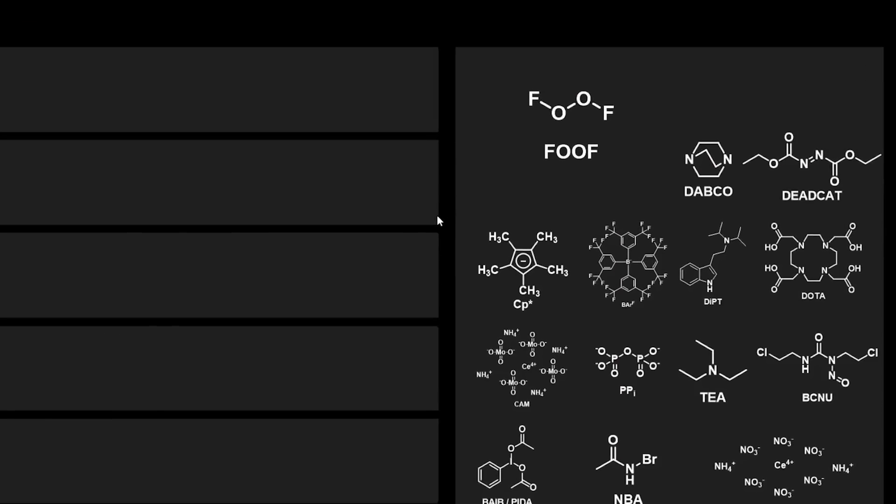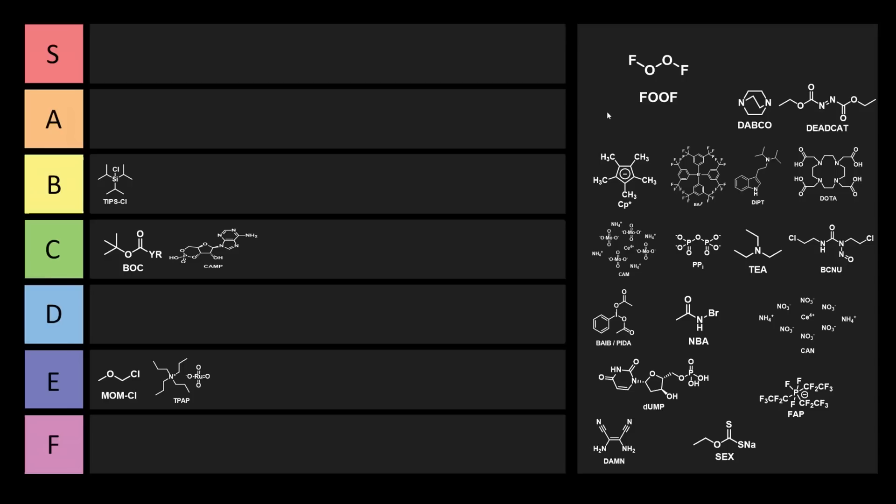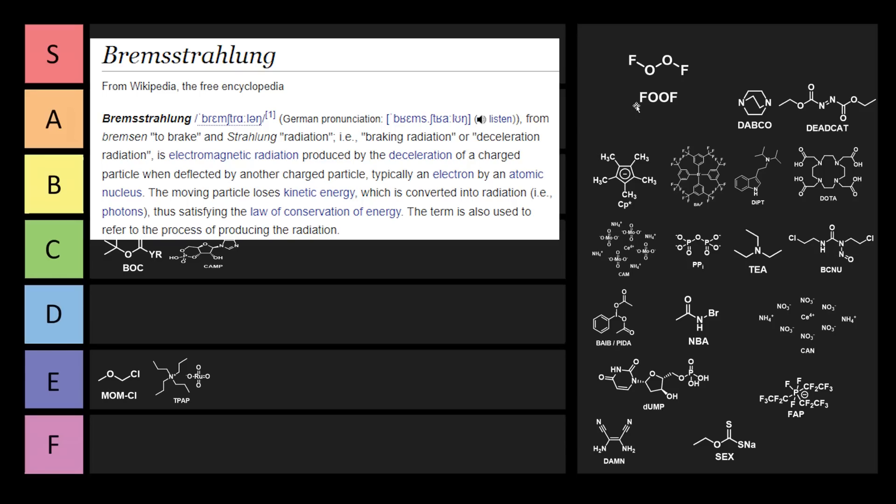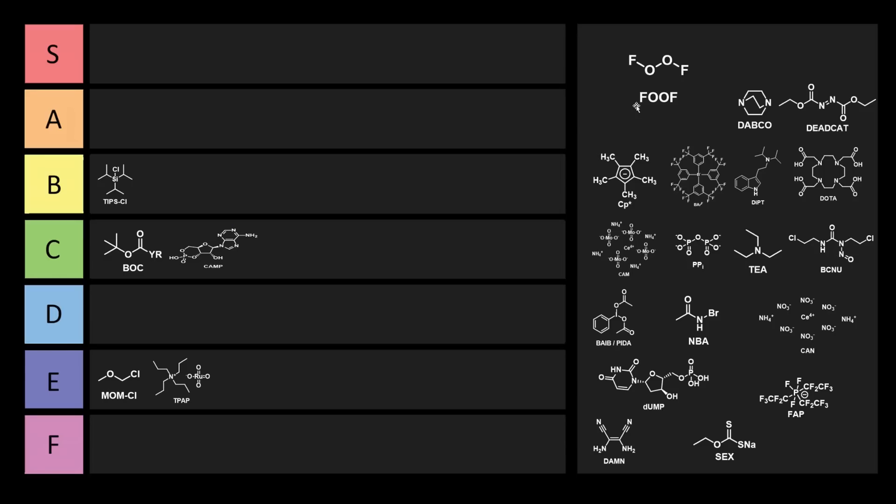Okay. FOOF. Dioxygen difluoride. This oxidant is super powerful and slowly decomposes to oxygen and fluorine basically no matter what, even at minus 160 degrees Celsius. This chemical reacts with almost any other chemical it encounters. It's formed by exposing a mixture of oxygen and fluorine to an electrical discharge. Alternatively, you can cool them to minus 196 degrees Celsius and expose them to bremsstrahlung, which is braking radiation. How much bremsstrahlung? Three mega electron volts. This chemical foofs everything it touches. I really like FOOF. I think FOOF can stay in S tier. FOOF is based.